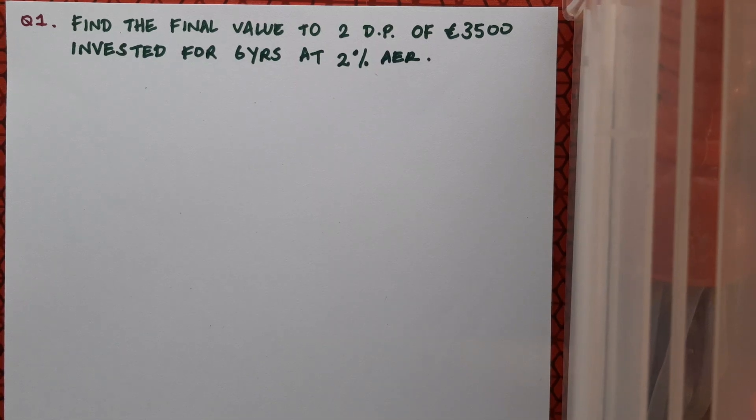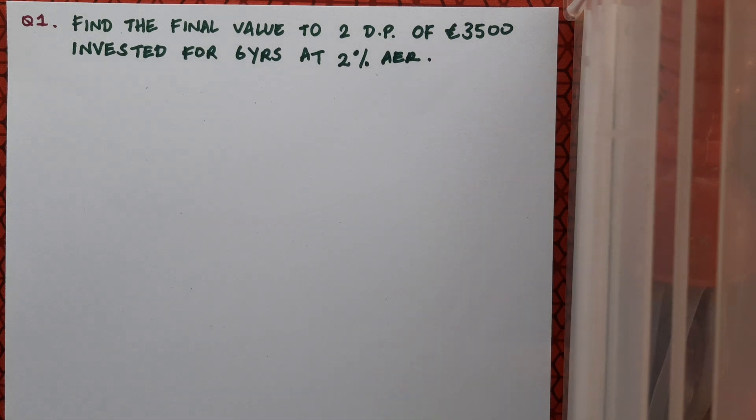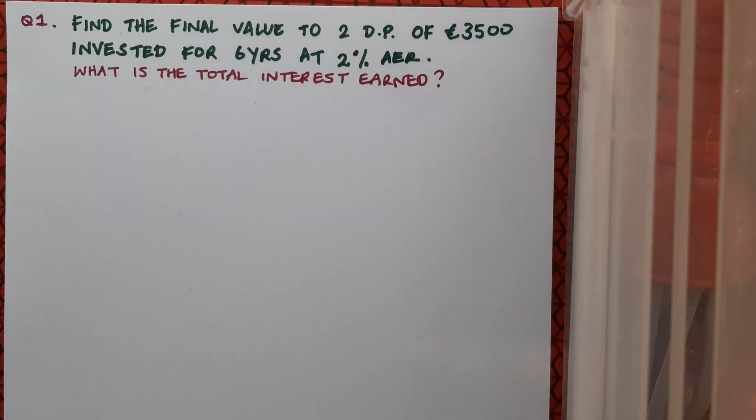So here's a fairly easy question to do yourself. Find the final value to two decimal places of €3500 invested for six years at 2% AER. And in this question also I want you to calculate the total interest earned. Pause the video here, complete the question, then check and see if you're correct.